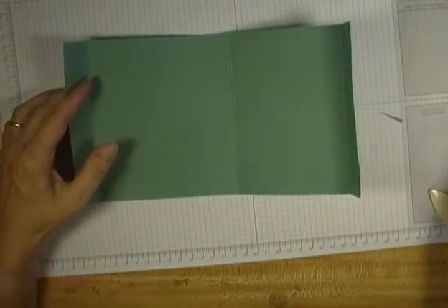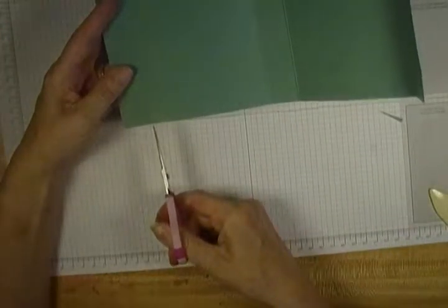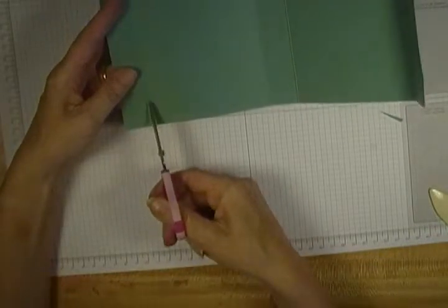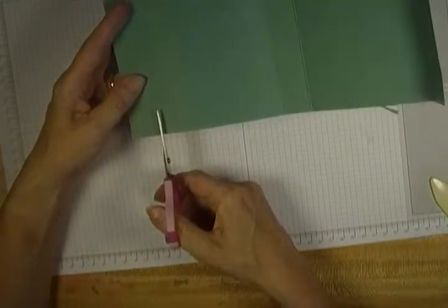And when you've done your scoring, you're going to be using paper snips and you'll need to be cutting from this edge to this one inch line on all four sides.